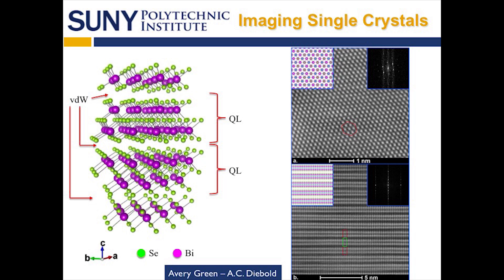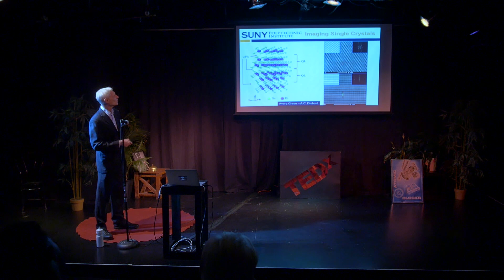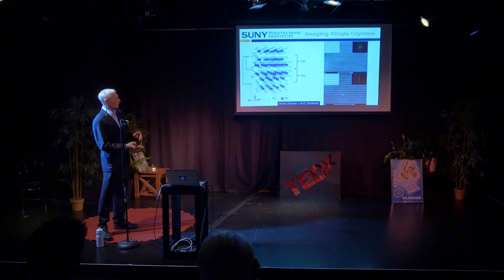Let's look at something locally here in the Albany area. My grad student, Avery Green, did this high-resolution transmission electron image of the crystal structure of this bismuth selenide crystal — a quite interesting crystal. You have these arrays of planes of selenium and bismuth — selenium, bismuth, selenium, bismuth, selenium — it's called a quintuple layer: five layers of atoms that bond to each other very weakly in what's called the van der Waals bond. Amazingly, you can see these kinds of atomic arrangements in a transmission electron microscope when it has aberration correction. You can see this dark line between the quintuple layers.